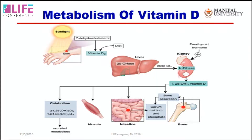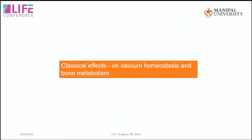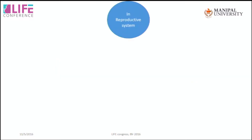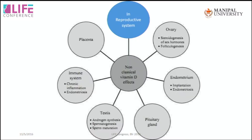When sunlight acts on the skin, the pathway proceeds through liver, kidney, bone, and intestines. Understanding calcium homeostasis and bone metabolism is important, but all of this can be interpolated into the reproductive system. Interestingly, the non-classical vitamin D effects are connected to the reproductive system — particularly ovarian steroidogenesis, folliculogenesis, endometrium for implantation, testicular androgen synthesis, and immune modulation.